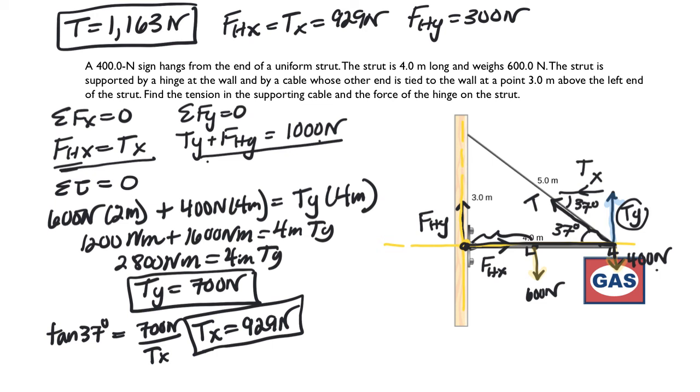And then I can do my Pythagorean theorem there as well. So I can do 929 squared plus 300 squared, square root, second answer. I get 976 for the hinge force in total.